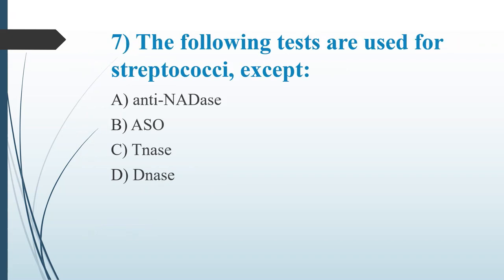Seventh question: The following tests are used for Streptococcus, except — Option A: Anti-DNase. Option B: [missing]. Option C: TNS. Option D: DNase. The answer is Option C, TNS — that is thermonuclease, which is specific for Staphylococcus aureus. TNS and DNase are specific for Staphylococcus aureus, but Streptococcus also produces DNase. So the exception here is TNS.